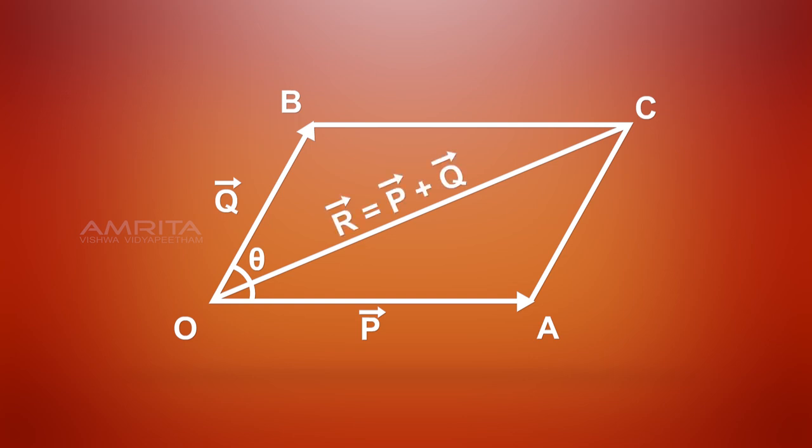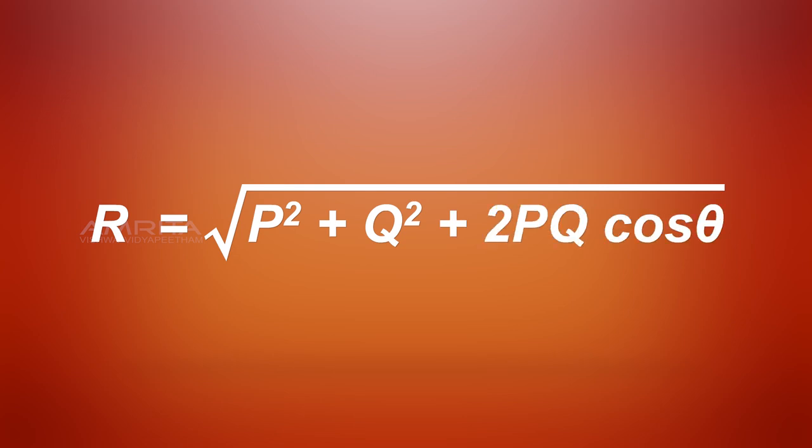Vector R is equal to vector P plus vector Q. R is equal to square root of P square plus Q square plus 2PQ cos theta.